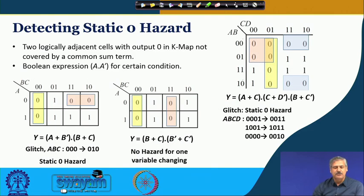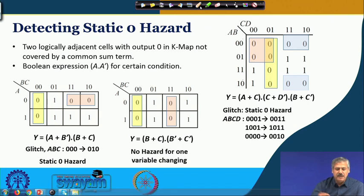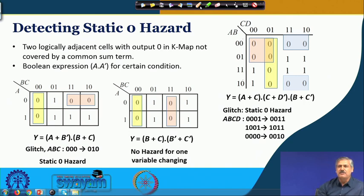How do we detect Static-0 Hazard? Static-0 Hazard detection is similar to Static-1 Hazard detection. Two logically adjacent cells with output 0 not covered by a common sum term indicate a hazard. In this case it is the 0-output cells making up the POS expression that are not covered by a common sum term. From the Karnaugh map we can find this, and if the Boolean expression ultimately reduces to a variable and its complement ANDed together for a certain input combination, that indicates a Static-0 Hazard.